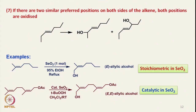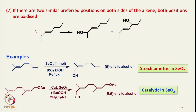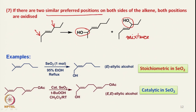Now if there are two similar preferred positions on both sides of the alkene, one can get oxidation at both positions, so a mixture is formed. One can avoid this if only one product is desired — you have to make sure that your substrate does not contain two similar preferred positions.